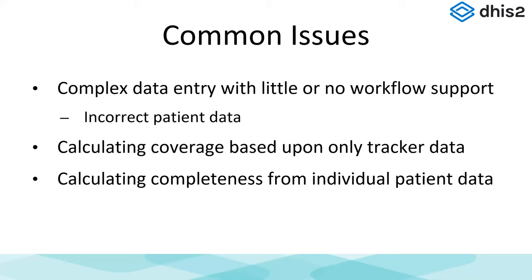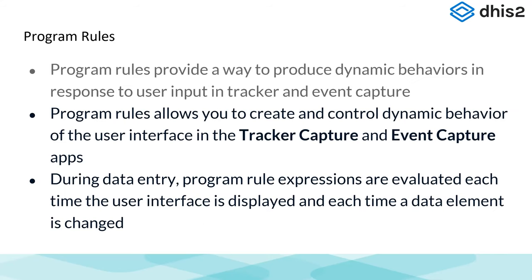Some common issues with data in tracker programs: most of us are building very complex data entry forms in tracker, and we're not building in a lot of workflow support. It's a problem in aggregate, and it's an even bigger problem in tracker. If we're capturing individual patient data, we have to put in a lot of workflow support. There are also questions about whether we can calculate coverages based upon tracker data only — the general rule of thumb is probably not. And calculating completeness from individual patient records is tricky: when is a patient actually complete?